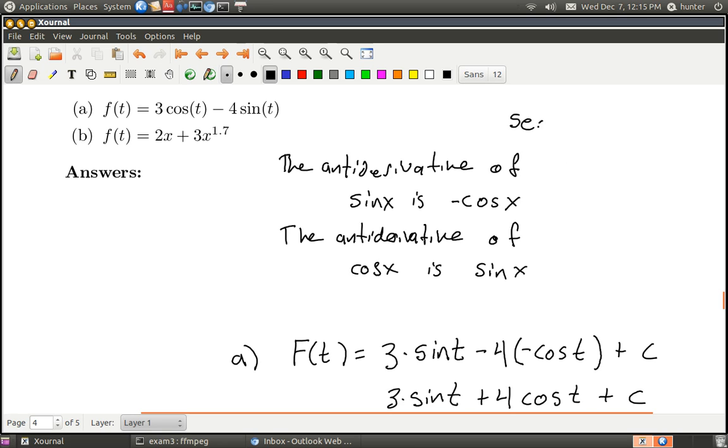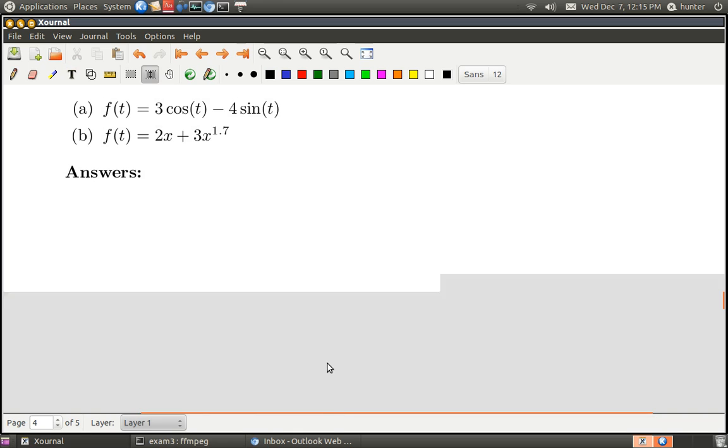And so it works like this just for all the trig functions. So what's the antiderivative of secant squared x? Well, the antiderivative of secant squared x is tangent x. What's the antiderivative of secant x times tangent x? It's secant x. Okay, so that's how these trig functions work.